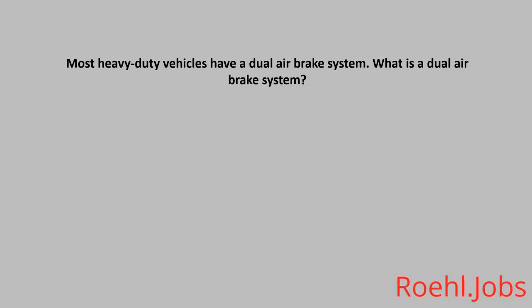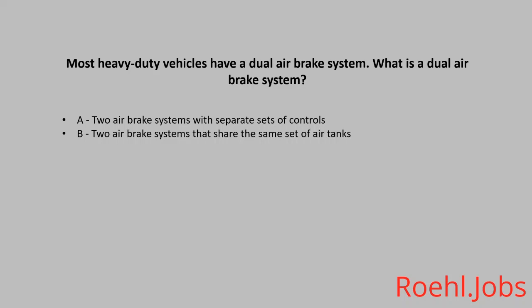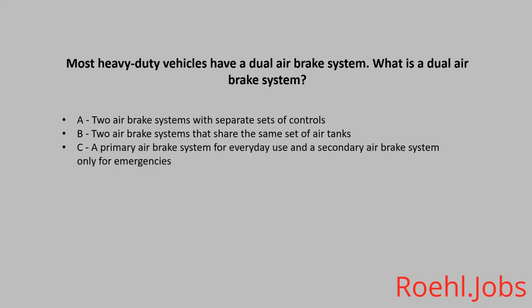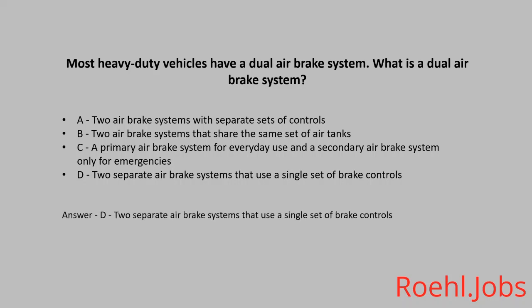Most heavy duty vehicles have a dual air brake system. What is a dual air brake system? A. Two air brake systems with separate sets of controls. B. Two air brake systems that share the same set of air tanks. C. A primary air brake system for everyday use and a secondary air brake system for only emergencies. D. Two separate air brake systems that use a single set of brake controls. The answer: D, two separate air brake systems that use a single set of brake controls.